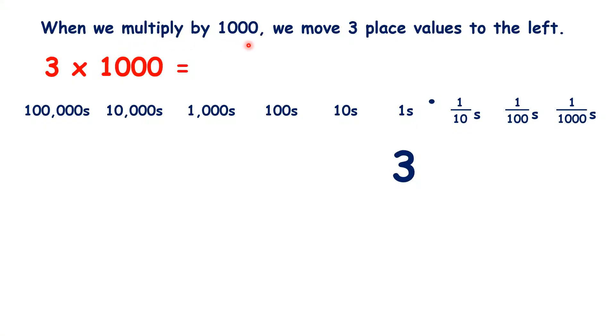When we multiply by a thousand, we move the digits three place values to the left.